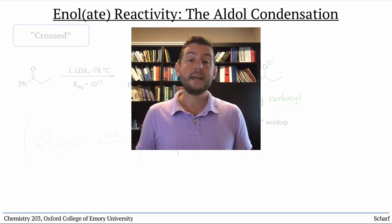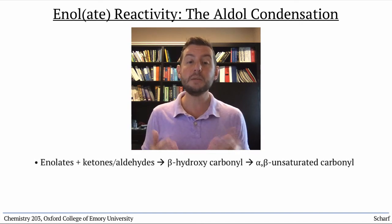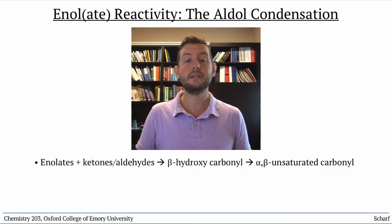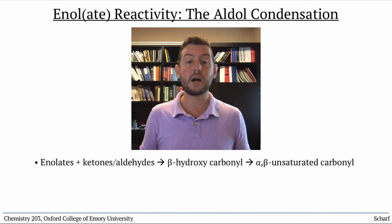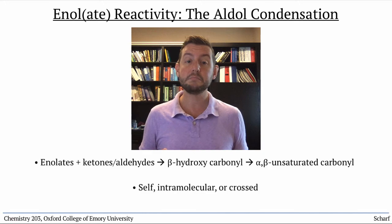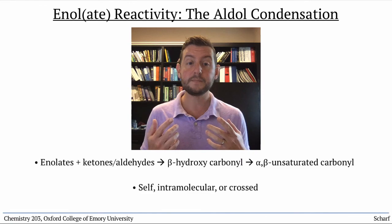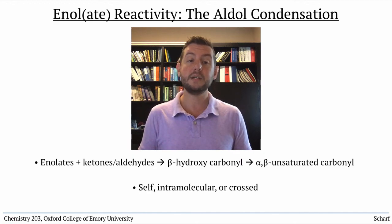To summarize: in the aldol reaction, enolates and ketones or aldehydes react with one another to initially produce beta-hydroxycarbonyl compounds, which usually eliminate to produce alpha-beta-unsaturated carbonyl compounds. The aldol reaction can occur between a carbonyl compound and its own enolate, between a carbonyl compound and an enolate within the same molecule, or between an enolizable carbonyl compound and a non-enolizable carbonyl that is more electrophilic than the enolizable one.